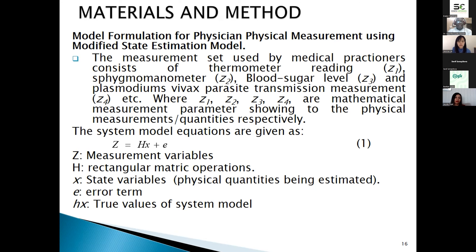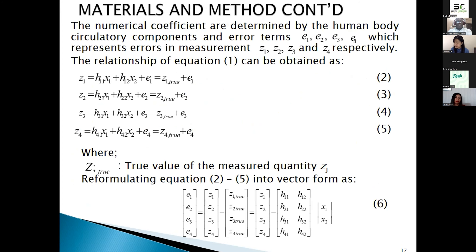Even though we have 10 measurement instruments — thermometers in a hospital or clinic — the question is whether all 10 instruments have the same level of accuracy. Some devices may have 5% degree of accuracy, some 3%, and some 10%, but are the same instrument type. We must ensure that measurement instruments have a confined degree of accuracy. Therefore, these measurement equations are formulated accordingly. We have the H rectangular matrices operation and the state variable to determine the existing state of the parameter in conformity with the physician-physical measurement, along with the error term and the true value of the system model.